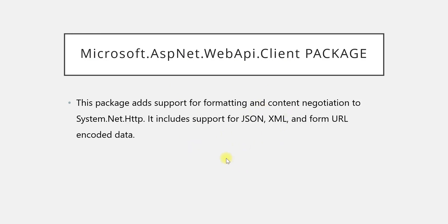I hope you understood what the HttpClient class is and what its important methods are. In the next video, we are going to see how to consume a GET request using the HttpClient class in a console application. First we'll see how to use it in a console application, and as we move ahead in upcoming sessions, we will also see how to consume it in an MVC application. If you have any doubts or concerns, you can write them in the comment section. Thank you for watching.